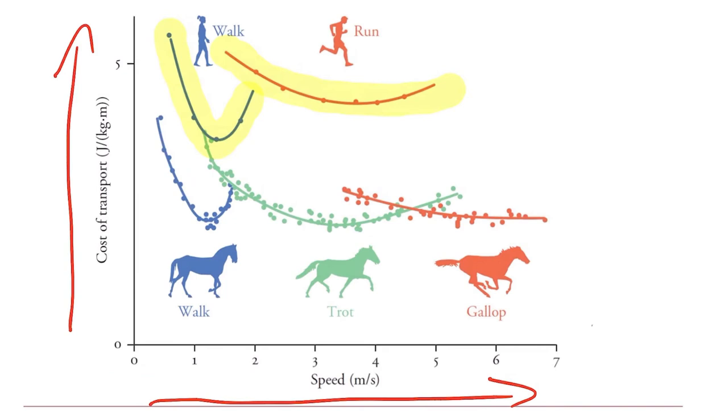Now horses are interesting because while we have two primary gaits, walking and running, horses have three: walking, trotting, and galloping. And what you see is they make these gait transitions.